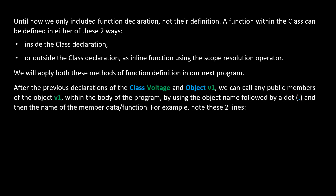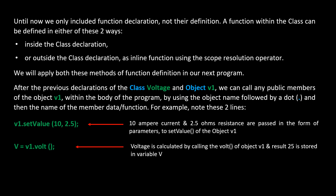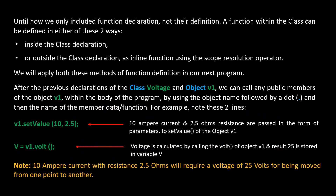After the declarations of class 'voltage' and object v1, we can call any public members of v1 within the program body using the object name, followed by a dot, then the name of the member data or function. For example, 'v1.set_value(10, 2.5)' passes 10 amperes of current and 2.5 ohms of resistance as parameters to the set_value function of object v1. Then 'v = v1.volt()' calculates voltage, and the result 25 is stored in variable v, since 10 amperes with 2.5 ohms requires 25 volts.